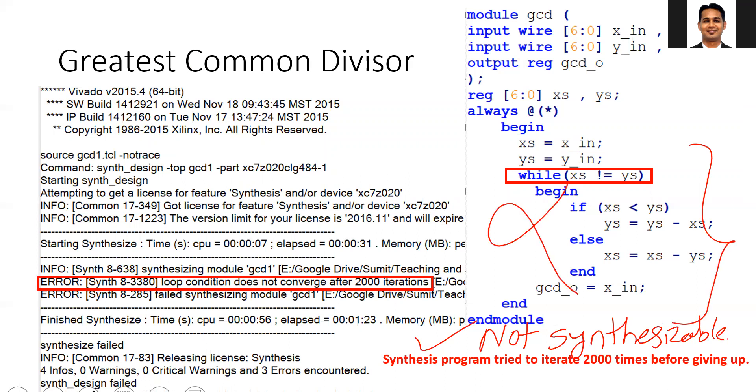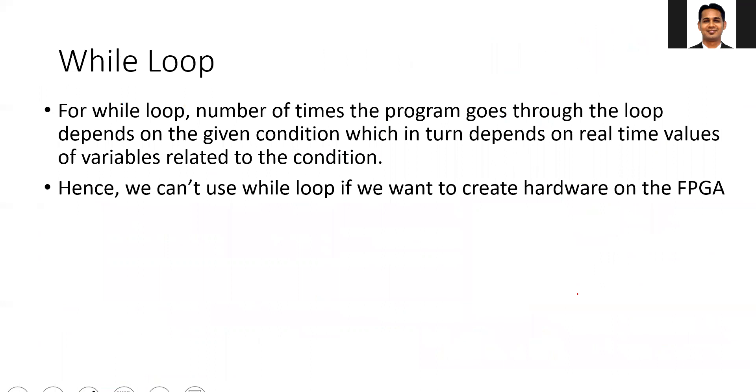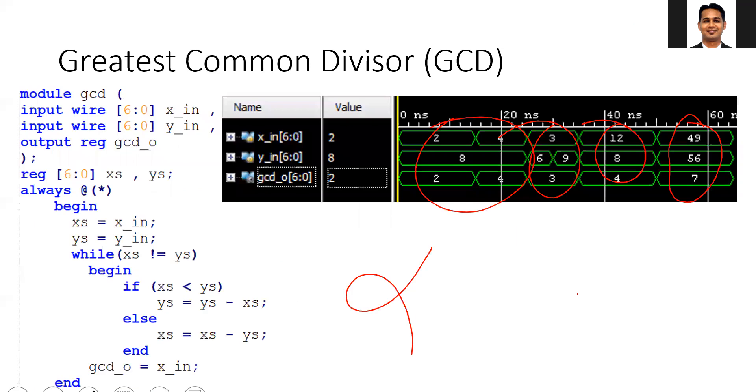You should not use the while loop in code which is to be implemented on hardware. You can use the while loop on the testbench but not on hardware. Why is the while loop not synthesizable? For any code to be implemented on hardware, you need a corresponding hardware block. In the while loop, whatever you are doing inside the while loop is not a problem. It's simple arithmetic operations, comparator operations. You can always have hardware for that. But the problem is here.